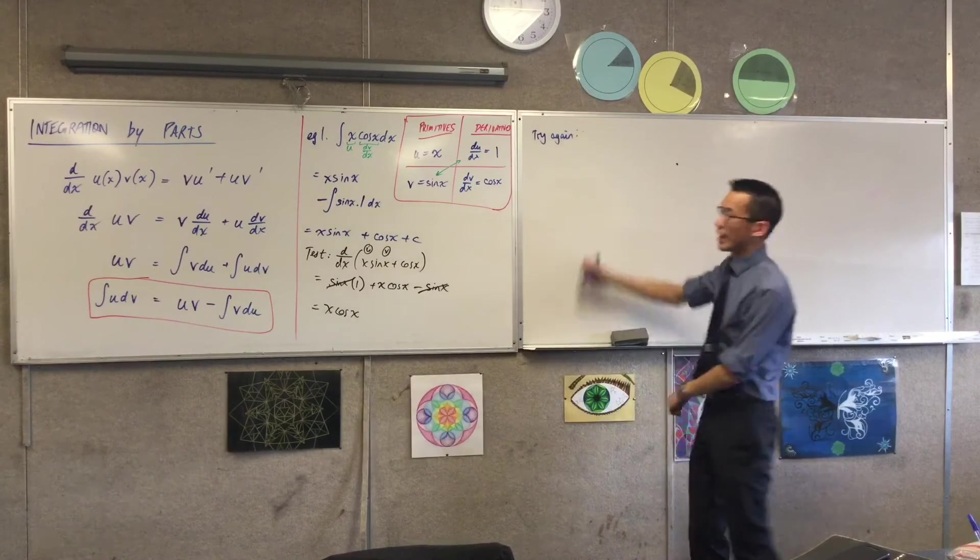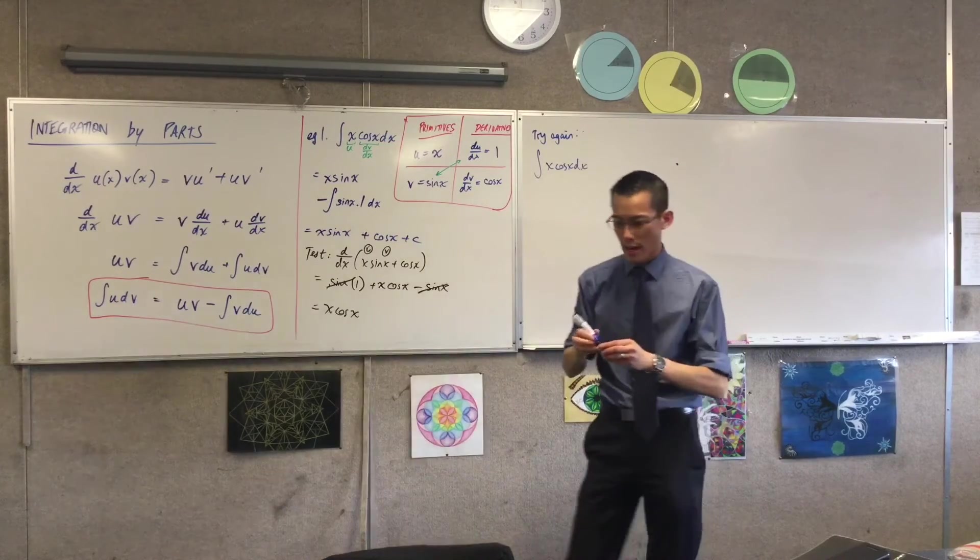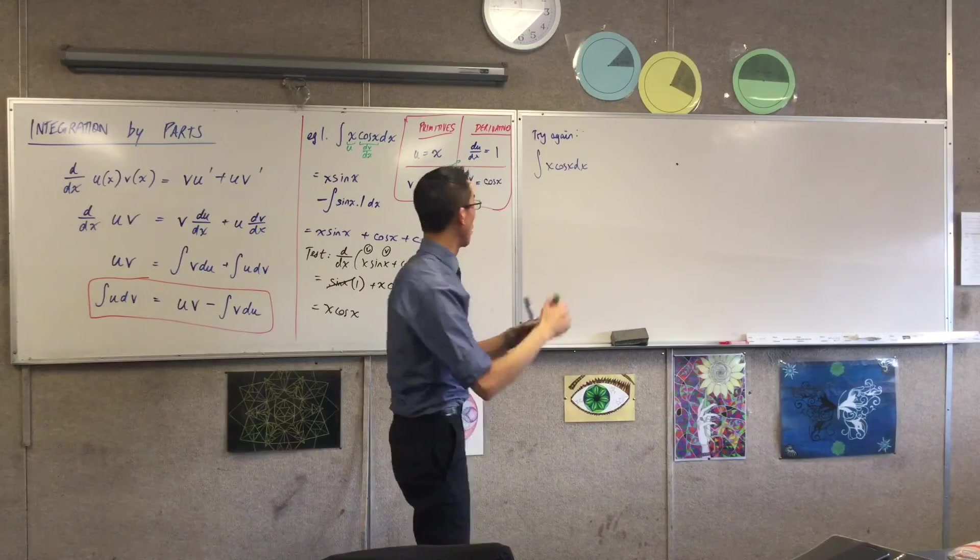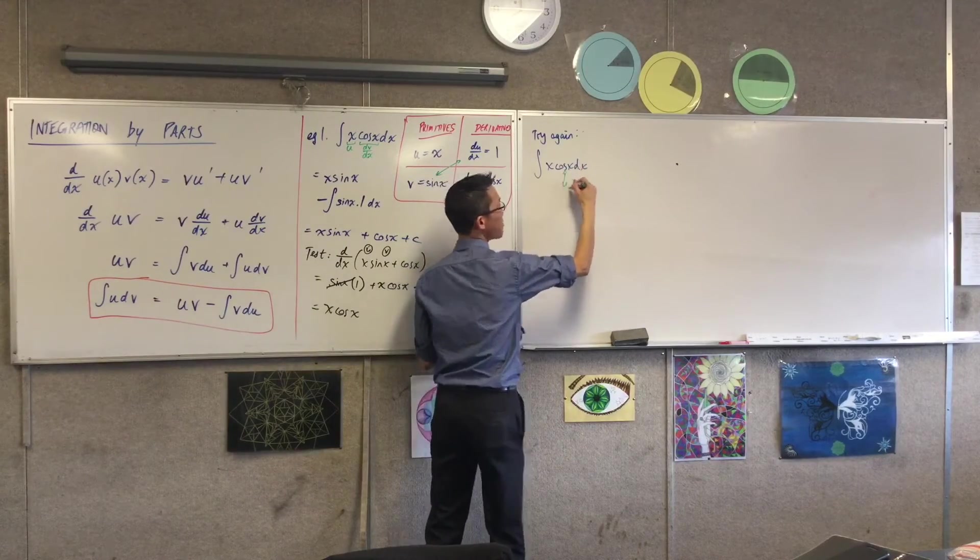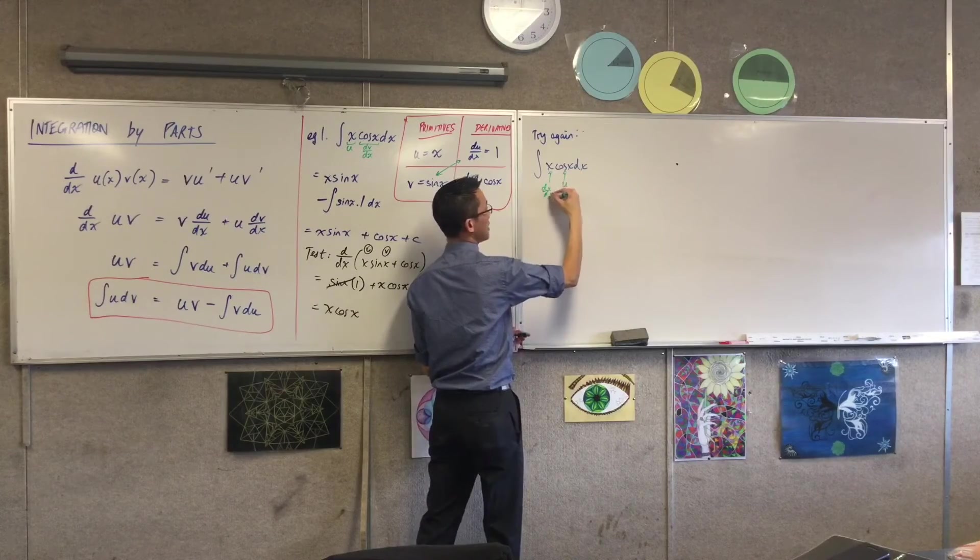So I'm going to try it again. x cos x dx, and this time, I'm going to reverse my order. So what if I said, well, let's make that one u, and let's make this one dv/dx.